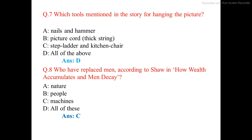Question number 7. Which tools are mentioned in the story for hanging the picture? The options are: nails and hammer, picture cord, step ladder and kitchen chair, all of the above. The correct answer is option D: all of the above.